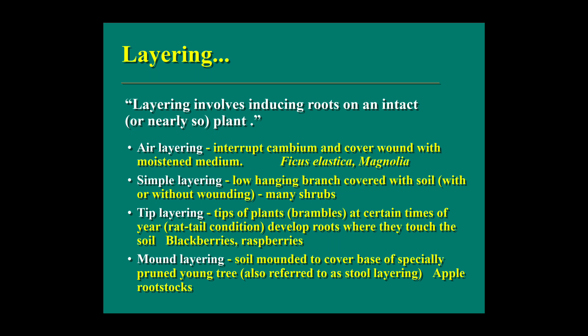Layering involves inducing roots on an intact plant — the part of the plant used for propagation remains attached and is not separated. Air layering involves interrupting the cambium and covering the wound with a moist medium; it is used for ficus, elastica, and magnolia. Simple layering involves covering a low-hanging branch with soil, with or without wounding, and can be used on many shrubs.